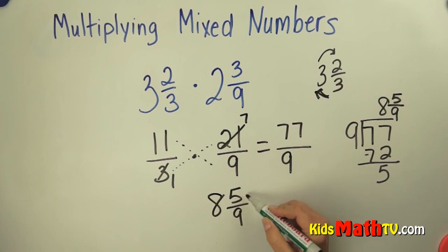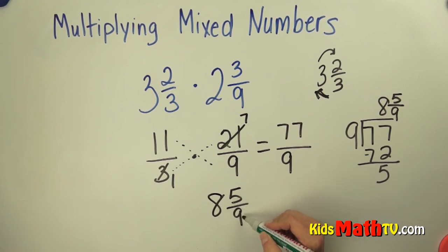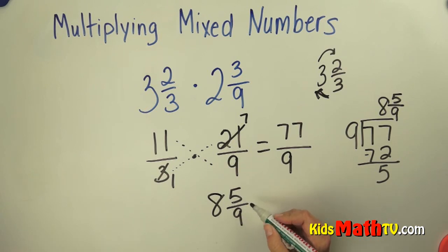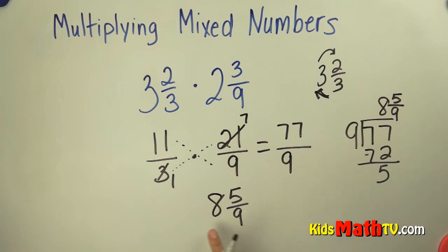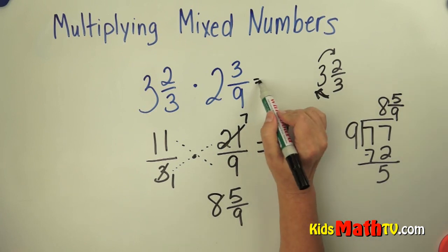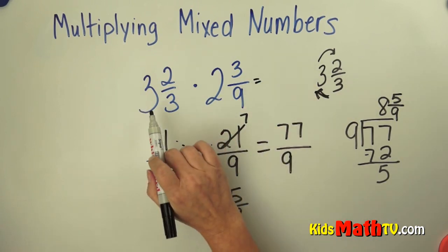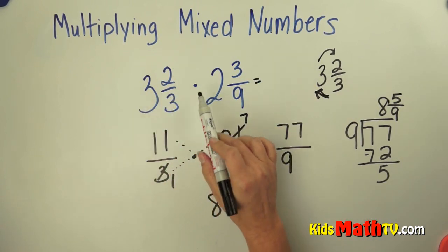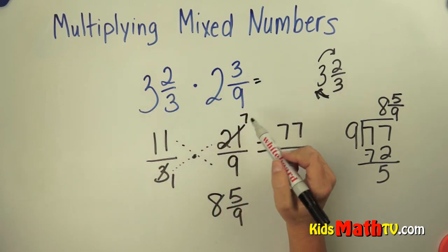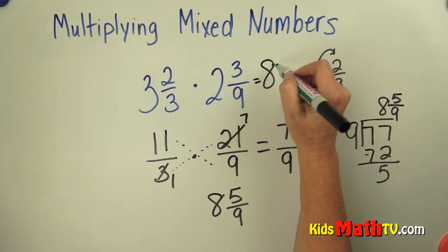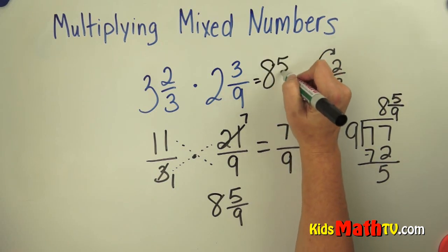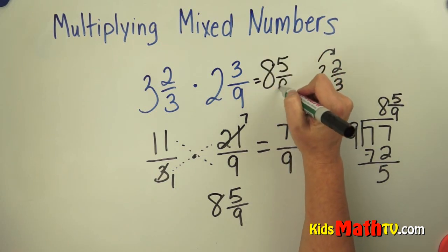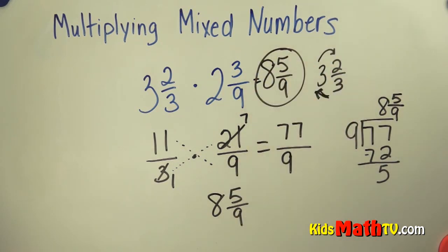Then I check: can I reduce or simplify 5 ninths? Is there a number that will divide both 5 and 9 evenly? There is not. So this is my answer — 3 and 2 thirds times 2 and 3 ninths equals 8 and 5 ninths.